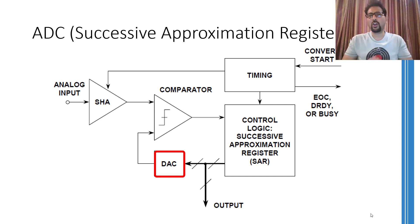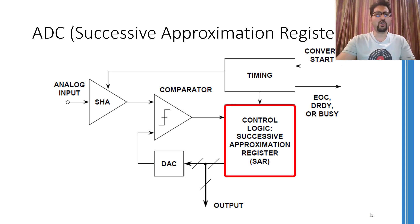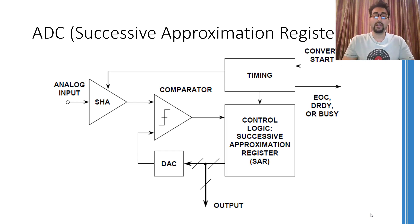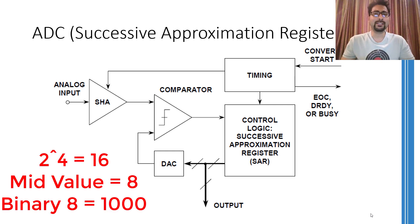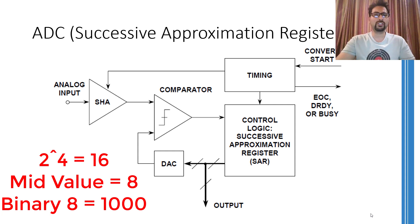Now, how does this digital to analog converter generate its output? The successive approximation register initially contains the mid value depending on the number of bits being used. For example, if you are using 4 bits only, the mid value for 4 bits would be 1000, that is the 8th level. Using a 4-bit ADC we can have 16 different levels, so the 8th level would be the mid value. Therefore at the start, the successive approximation register will have 1000 stored in it.